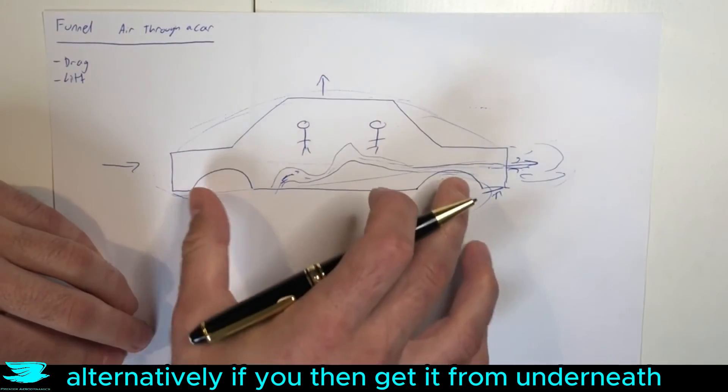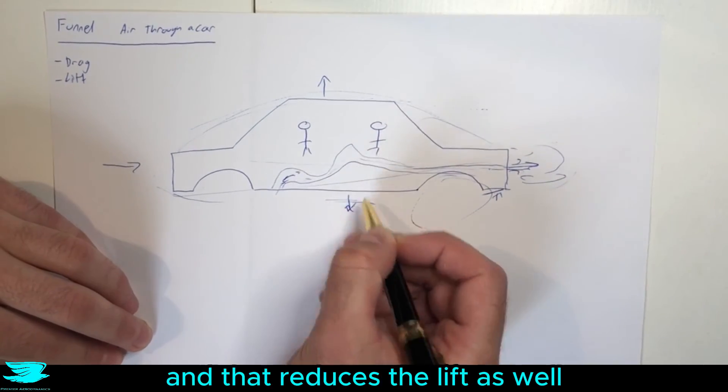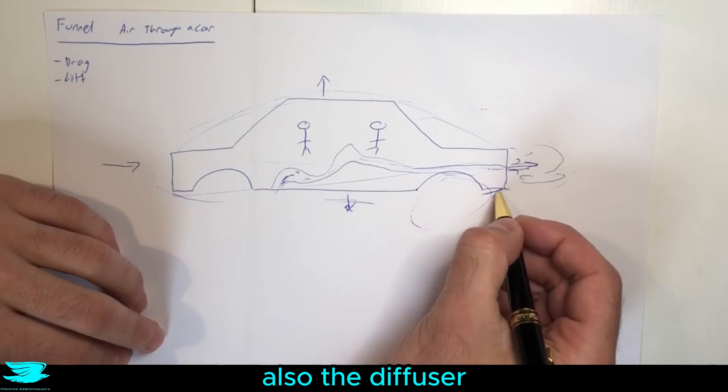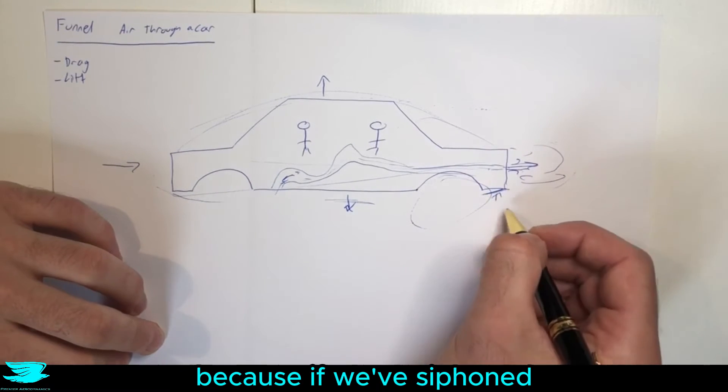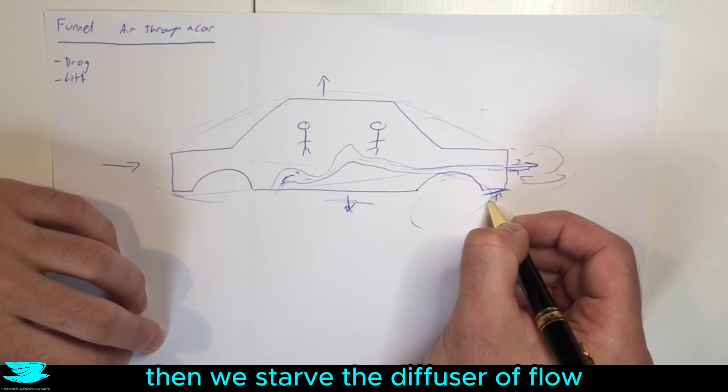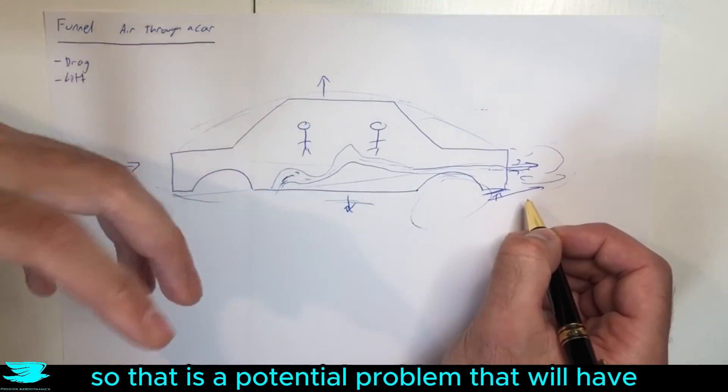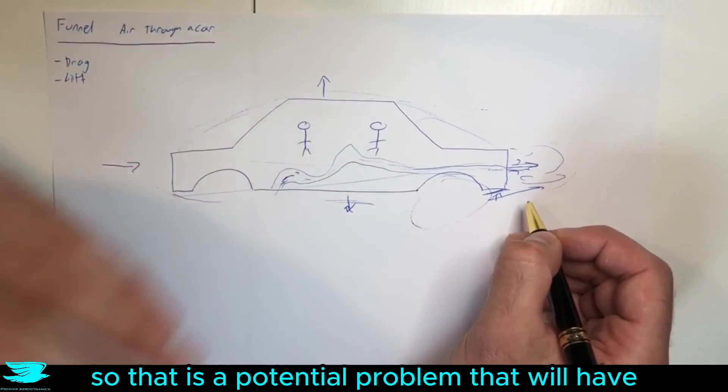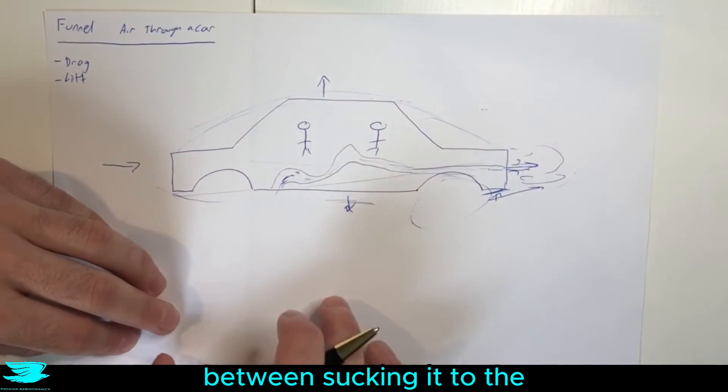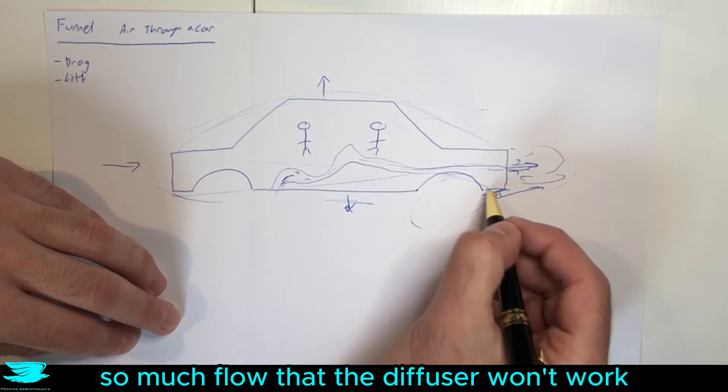Alternatively if you then get it from underneath you may be able to create a suction force underneath then pulling the car down and that reduces the lift as well. Also the diffuser, we need to make sure that we have flow coming over the diffuser properly because if we've siphoned too much air from underneath then we're starving the diffuser of flow and that we don't get to kick the flow up as much, which means that the lift actually increases. So that is a potential problem that we'll have in terms of lift if we siphon air off from underneath. There's a balancing act going on between sucking it to the ground and not taking away so much flow that the diffuser won't work.